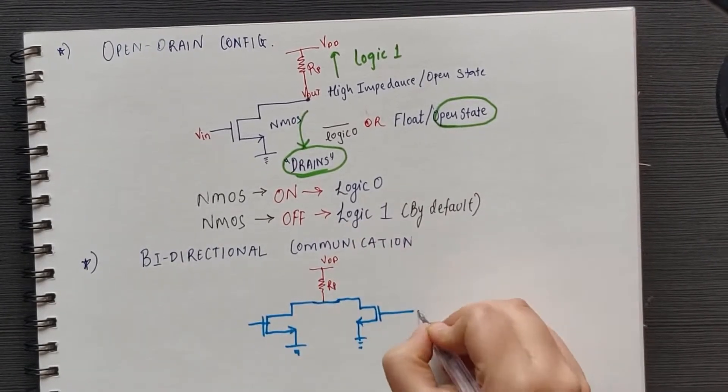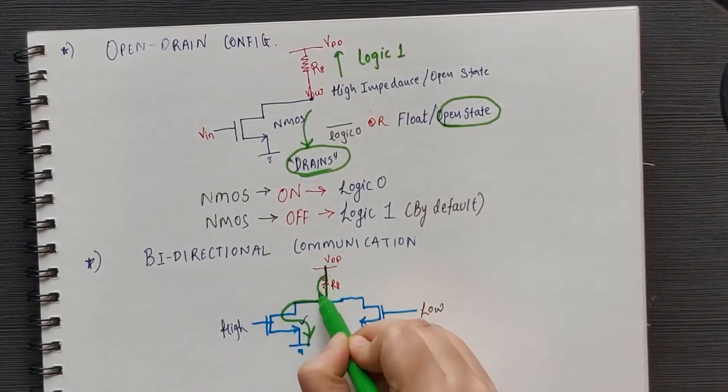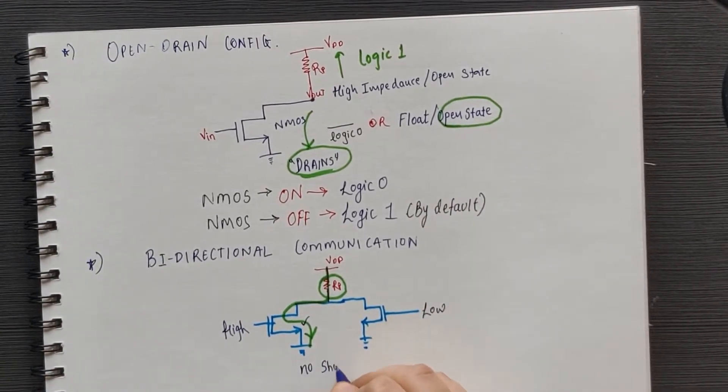then the pull-up resistor ensures that the current doesn't flow freely from VDD to ground. Thus, there is no short circuit in this case.